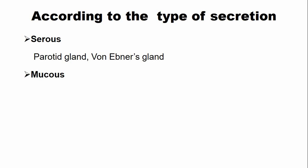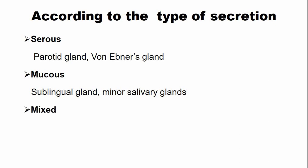The mucus secretion is produced by the sublingual gland, and all the minor salivary glands produce mucus secretion except the Von Ebner glands. The third type is mixed secretion, meaning some glands produce both serous and mucus secretion at the same time. The submandibular gland produces both serous and mucus secretions.